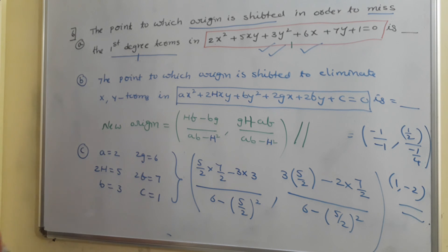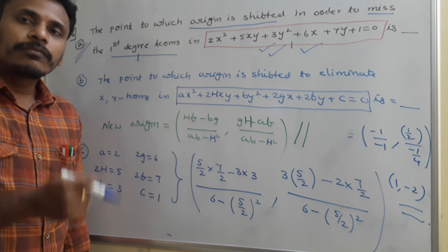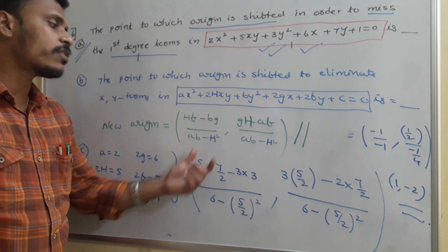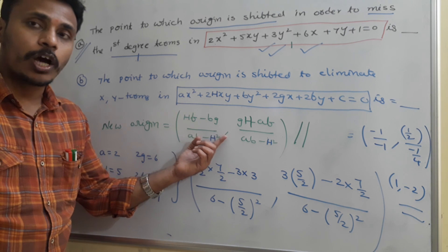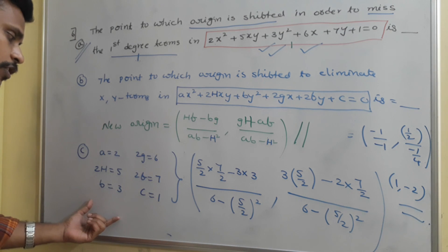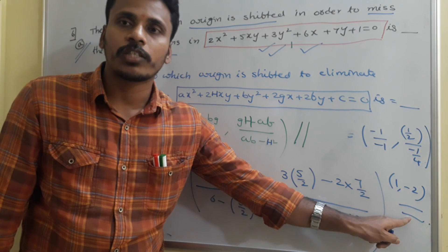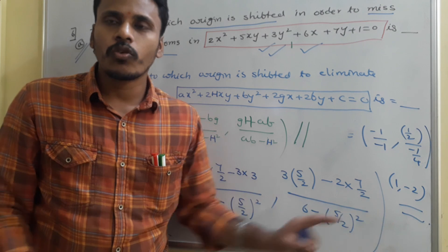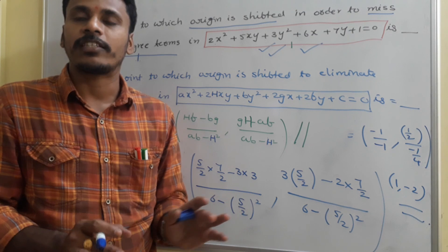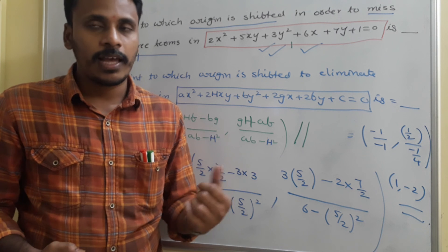So I explained the actual step-by-step process, but without doing the complete expansion every time, we have this formula to find the new origin directly. Compare the given equation with the standard form, identify all coefficient values, substitute in the formula, and on simplification you get the new origin. This is one important model related to the translation of axis. Translation of axis ends here, and in the next class we will study rotation of axis.